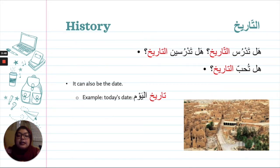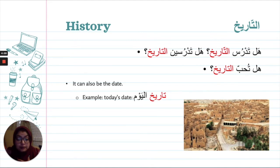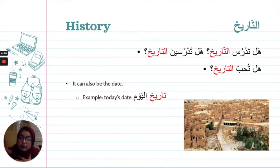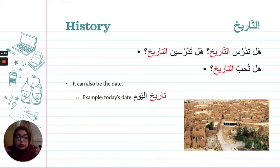التاريخ — history. هل تدرس التاريخ? هل تدرسين التاريخ? If you do study it: نعم، أدرس التاريخ. If not: لا أدرس التاريخ. هل تحب التاريخ? أنا أحب التاريخ كثيراً. Note that التاريخ means history as a subject, but تاريخ can also mean the date. So التاريخ اليوم means 'the date today.'